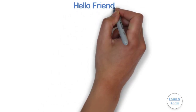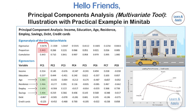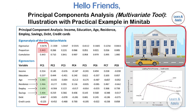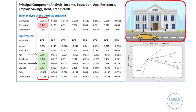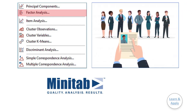Hello friends. In the last video, we had seen the first tool of multivariate analysis in Minitab software — that is principal component analysis — with the help of a practical example. In this video, we are going to learn the second tool of multivariate analysis in Minitab software, that is factor analysis, with the help of a practical example for easy understanding and better clarity.